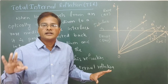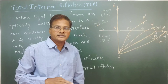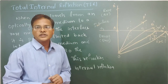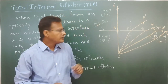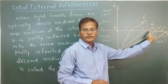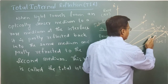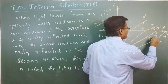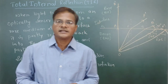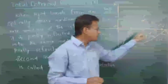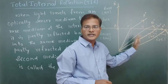So this is what we are going to call total internal reflection, and this is what we call the critical angle of incidence. When the angle of incidence reaches a certain value, the angle of refraction becomes 90 degrees. Critical angle means: the angle of incidence for which the angle of refraction becomes 90 degrees — that angle of incidence is called the critical angle.